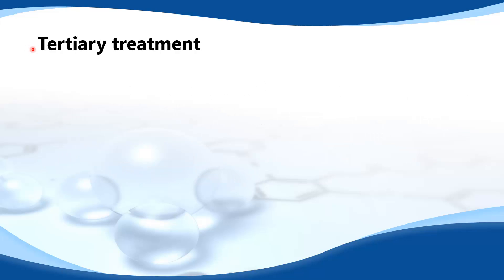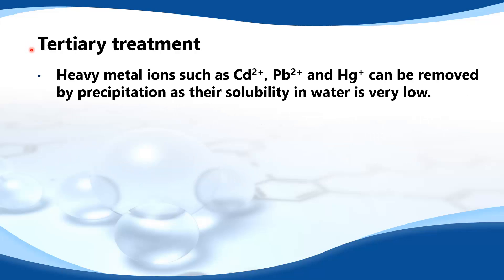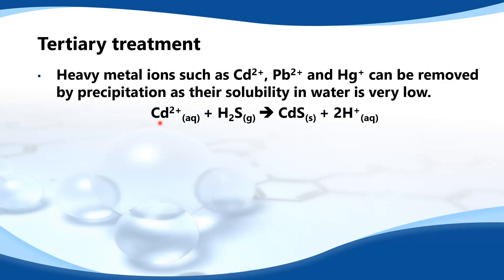Next we look at tertiary treatment. Heavy metal ions such as Cd2+, Pb2+, and Hg+ can be removed by precipitation, as their solubility in water is very low. Here's an example of cadmium 2+ ions being removed with hydrogen sulfide gas.